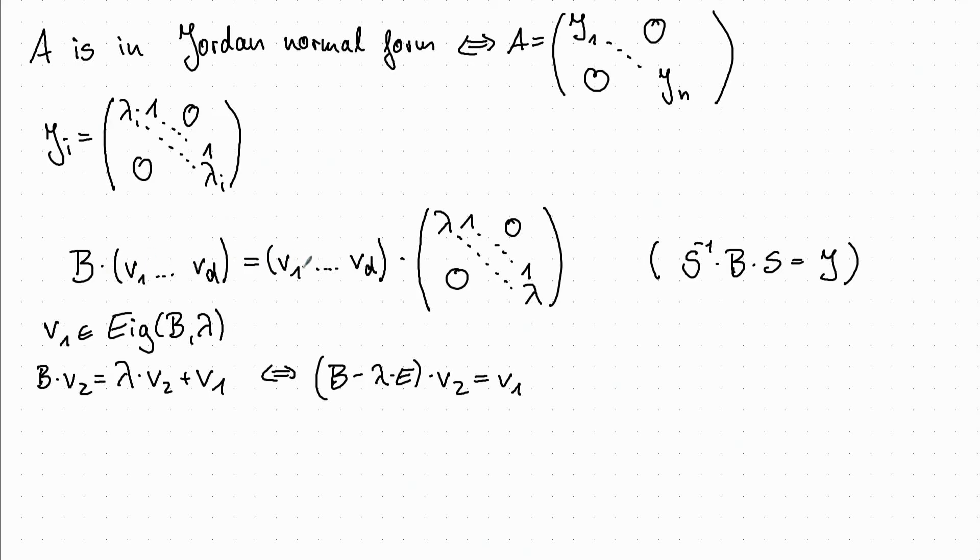And we continue doing this for every vector and always get this until Vd is equal to lambda times Vd plus Vd minus 1. So N is here just any number between 2 and D.